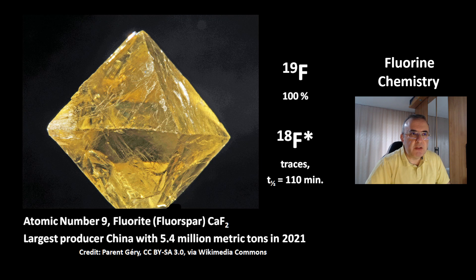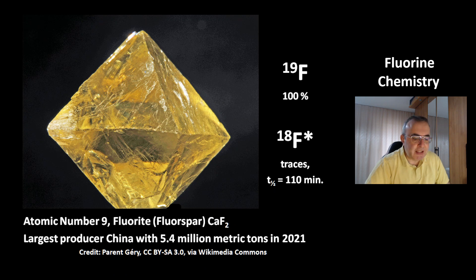In nature, 100% of the isotopes are fluorine-19 isotopes. The isotope fluorine-18 only exists in traces and has a half-life of 110 minutes. The largest producer of fluorite is China, with 5.4 billion metric tons in 2021.